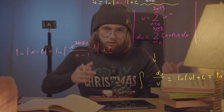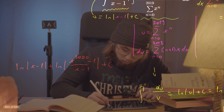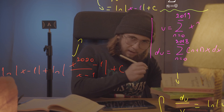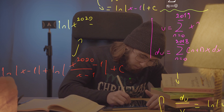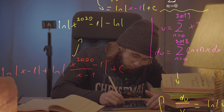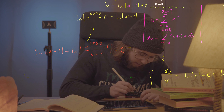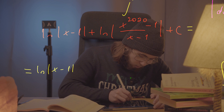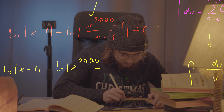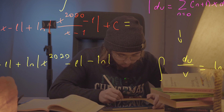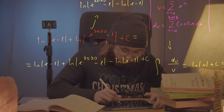We can use the laws of logarithms to rewrite the natural log of (x^2020 minus one) over (x minus one) as the natural log of the absolute value of x^2020 minus one, minus the natural log of x minus one. When we do that, we get the natural log of the absolute value of x minus one, plus the natural log of the absolute value of x to the power of 2020 minus one, minus the natural log of x minus one, plus a constant.